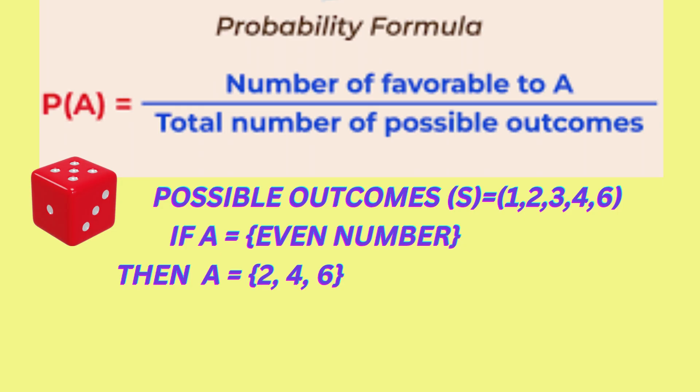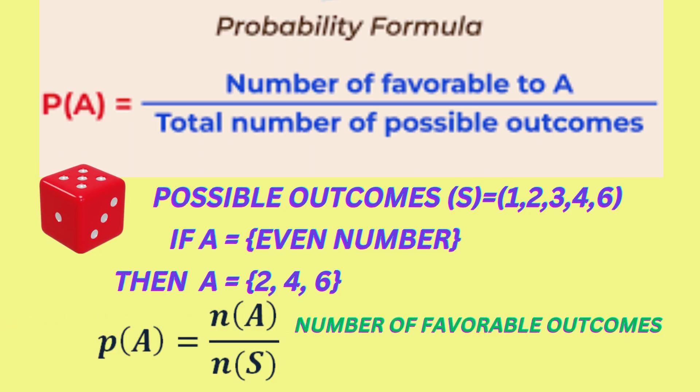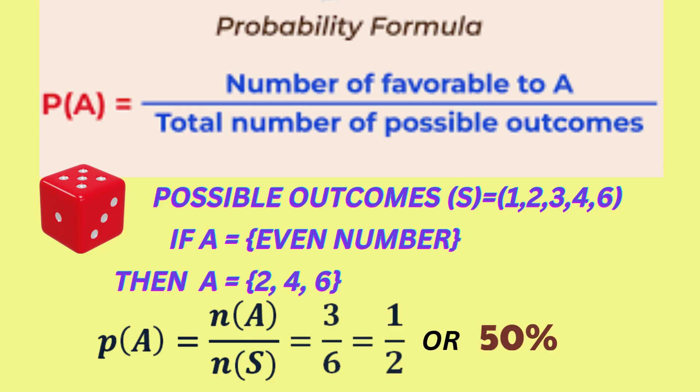So, the probability of event A occurring will be the number of elements in set A representing the favourable outcomes over the number of elements in the sample space, S, representing the total number of possible outcomes. That's 3 over 6, or 1 half, or 0.5, or 50%.